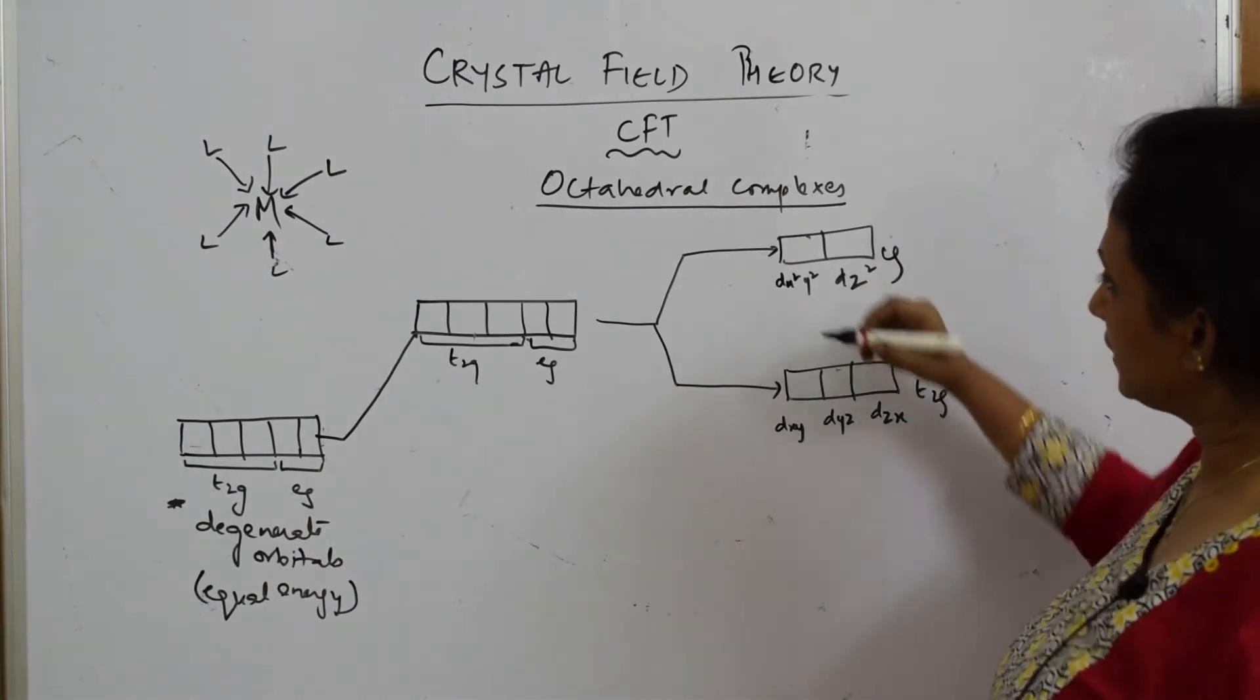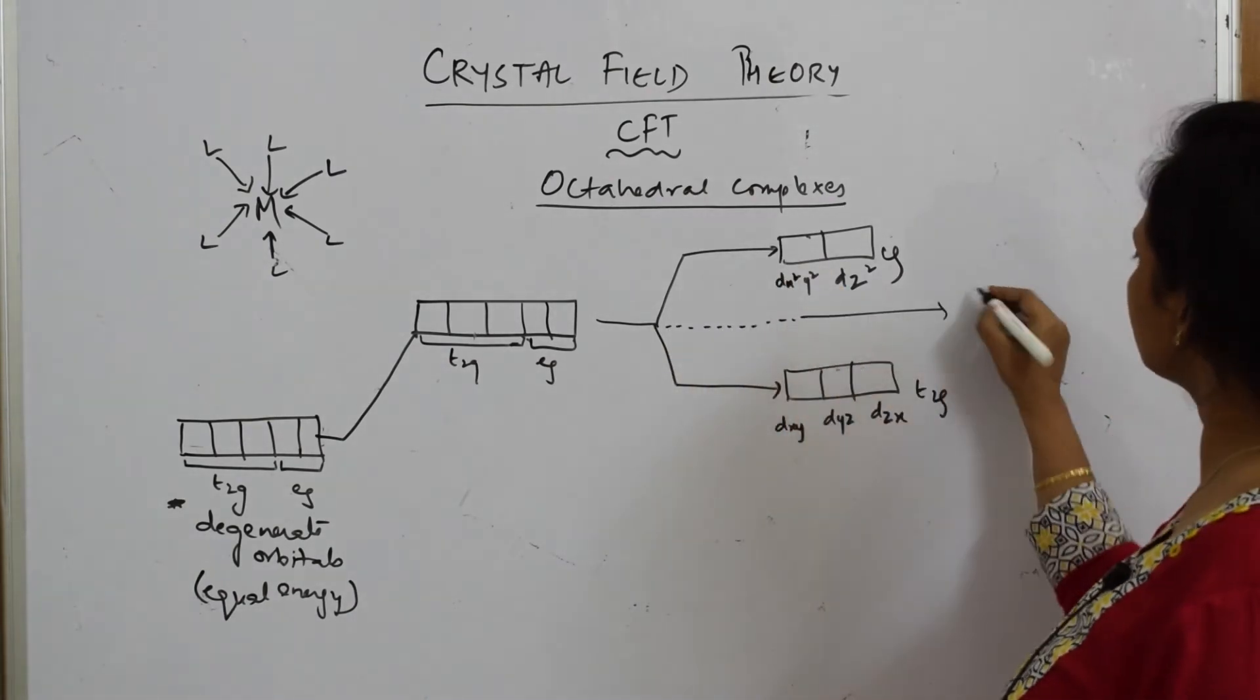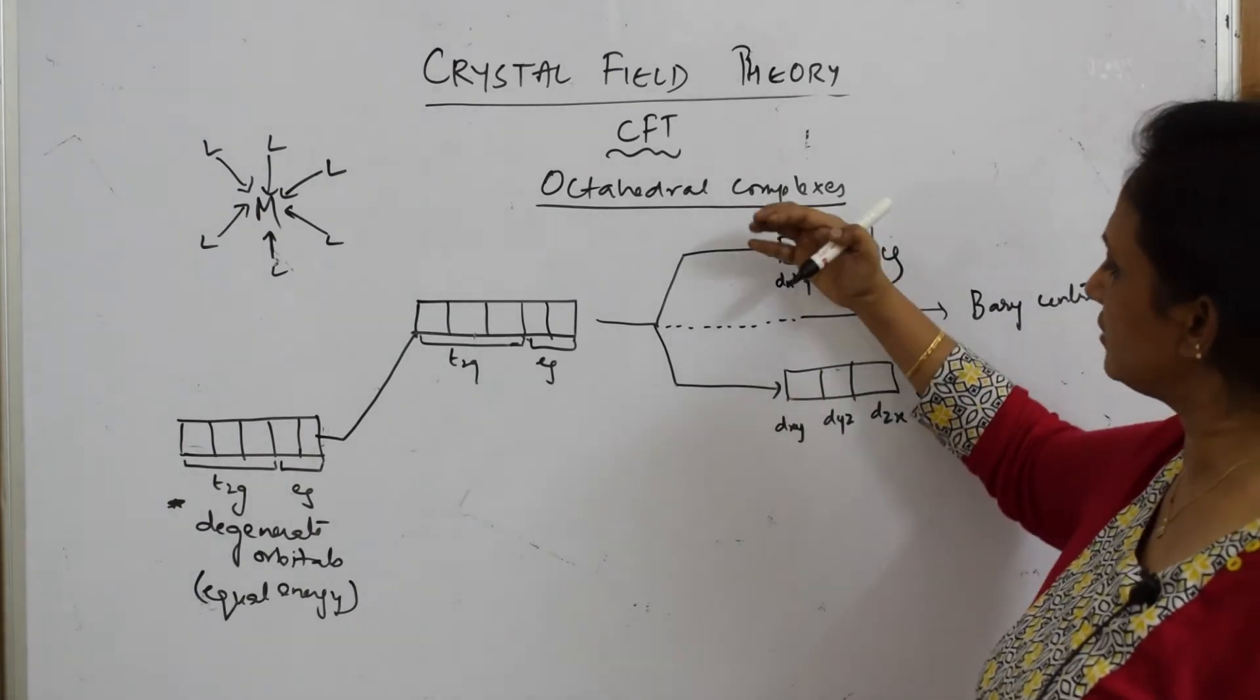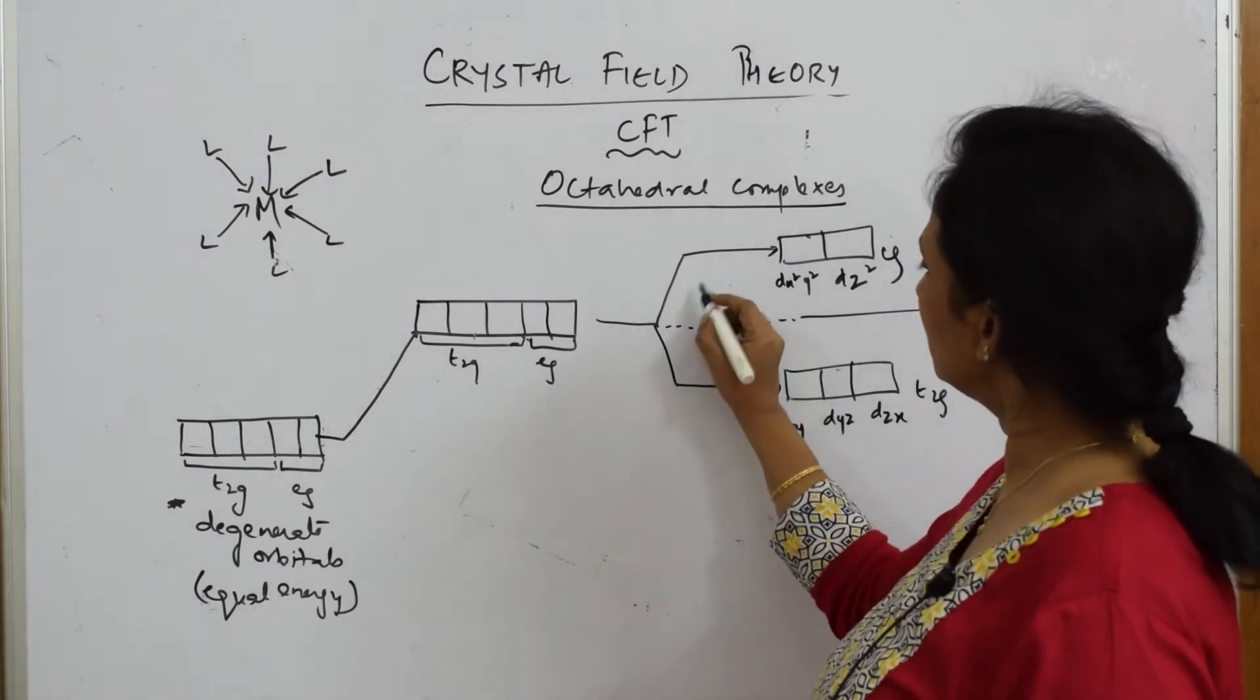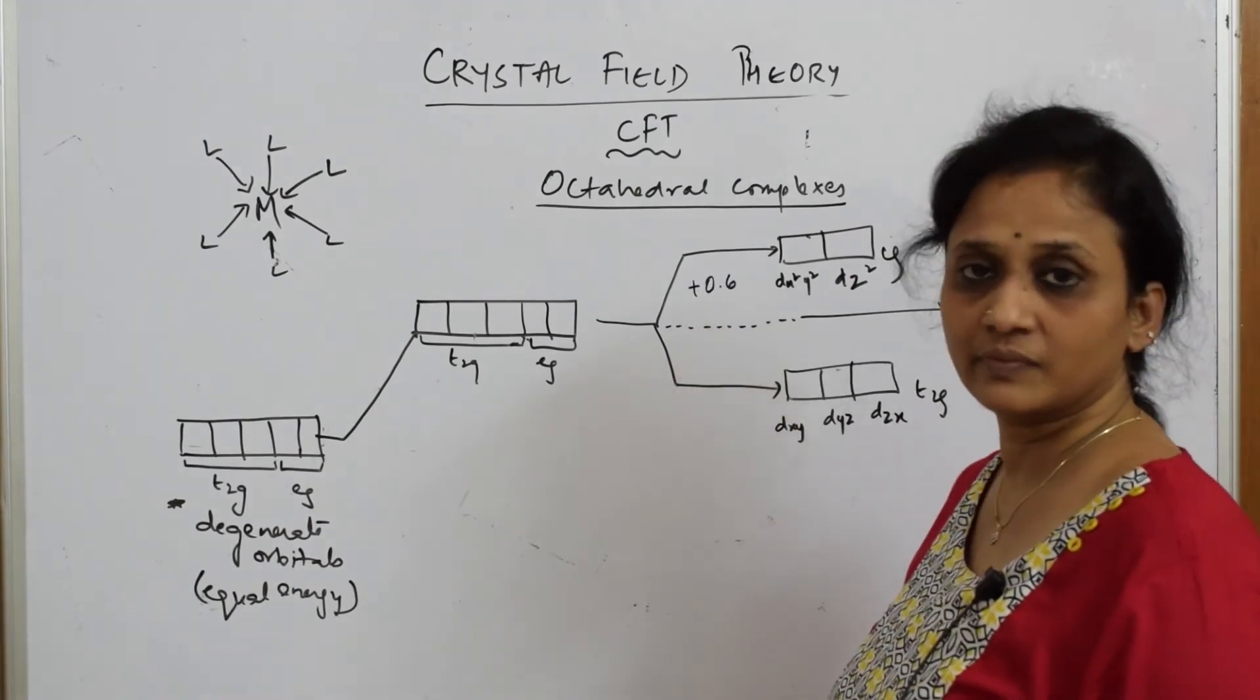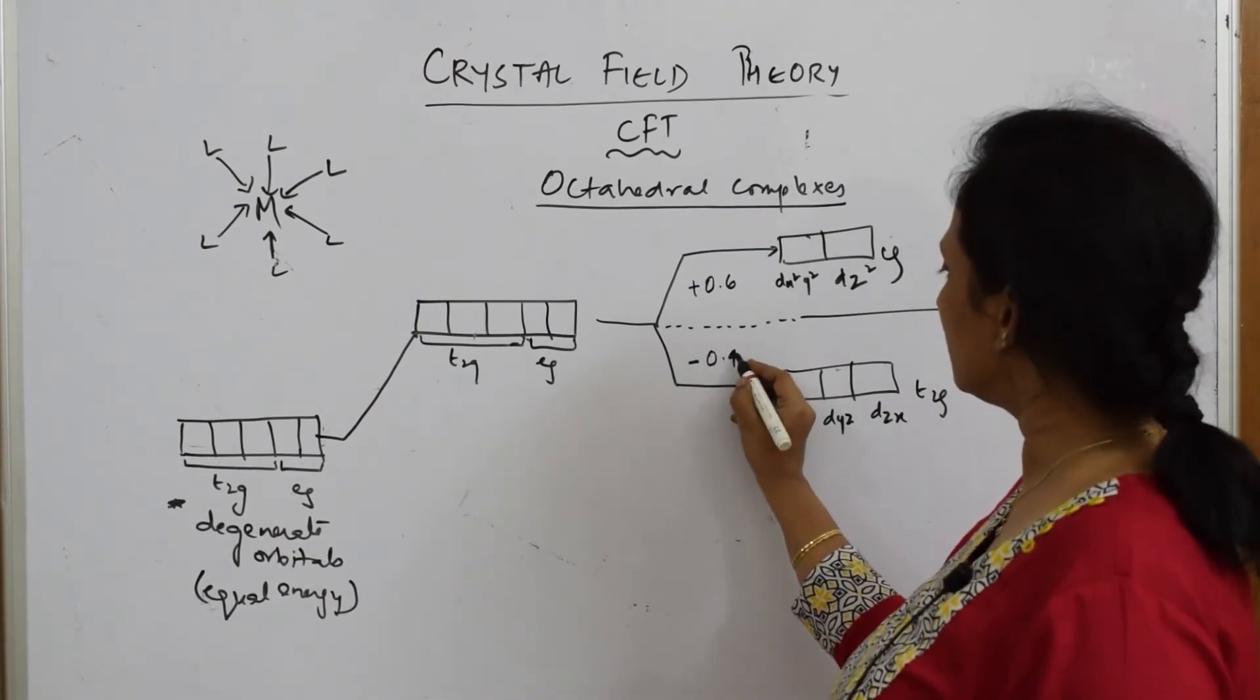Observe carefully. The line which separates these two energy levels is called the barycenter - B-A-R-Y-C-E-N-T-R-E. Now important thing: eg is of higher energy, t2g is of lower energy. How much is the energy difference? This particular energy is increased by +0.6, this energy has decreased by -0.4.